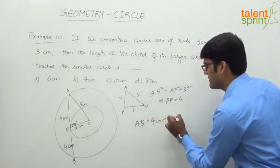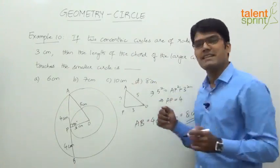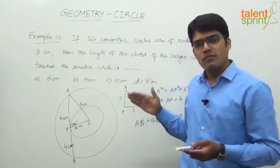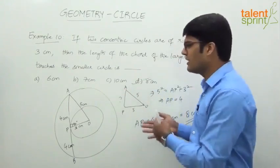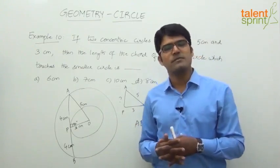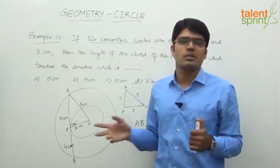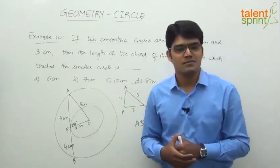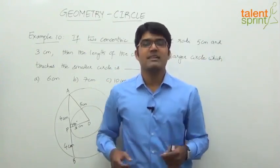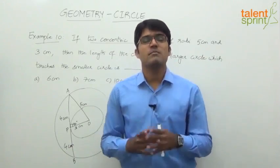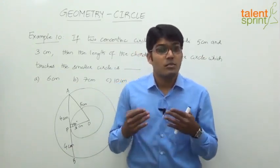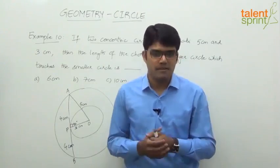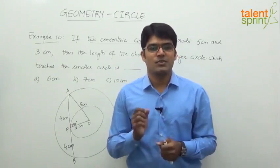Therefore, the length of chord AB equals 4 centimeters plus 4 centimeters, which is 8 centimeters — option D is the correct answer. The key point: chords of the larger circle become tangents of the smaller circle. Once you've solved one example of this form, you can answer similar questions very quickly. If one radius is 5 and the other is 3, it has to be 4, and two times 4 is 8 — you'll be able to mark the answer in less than 5 seconds. Keep practicing!